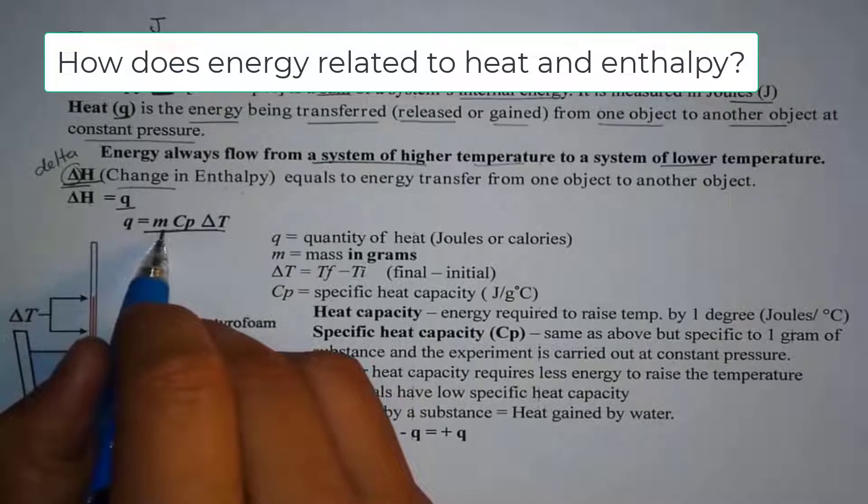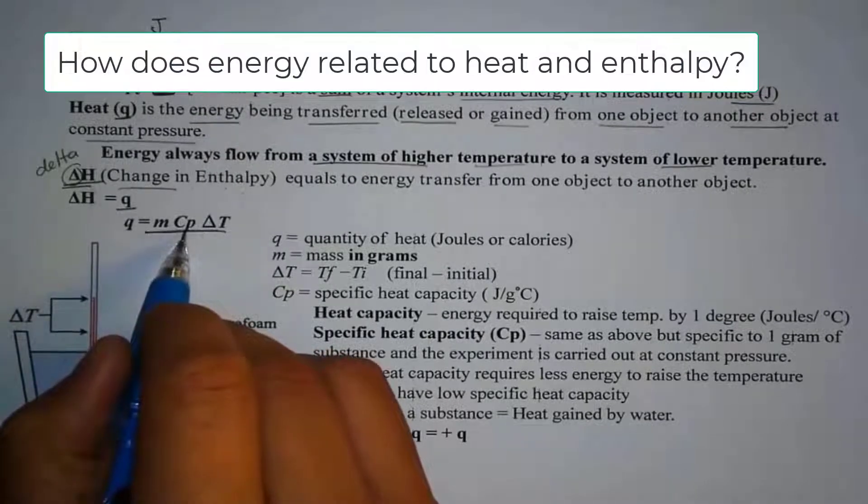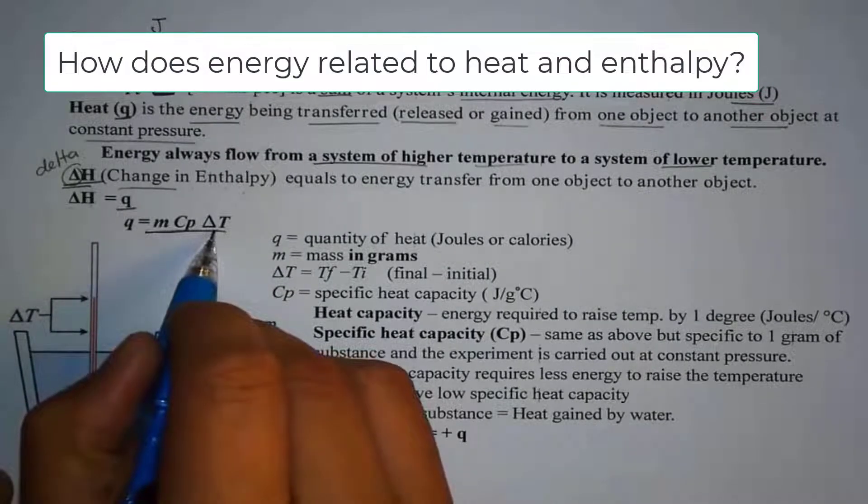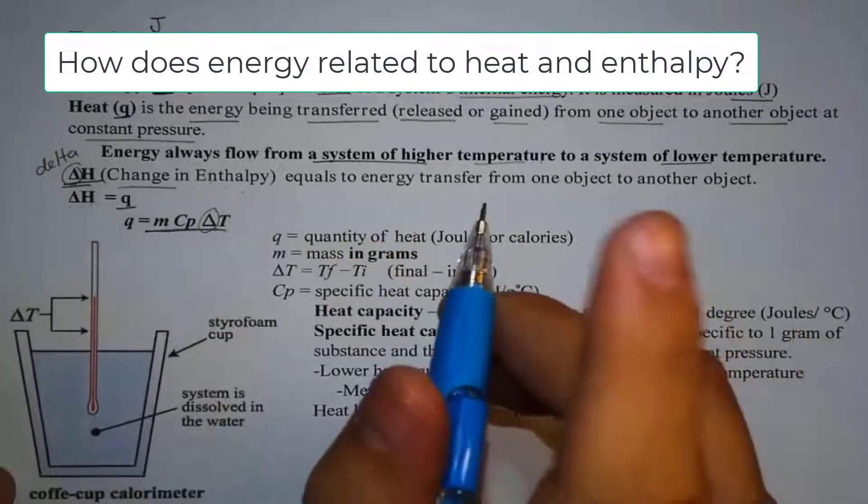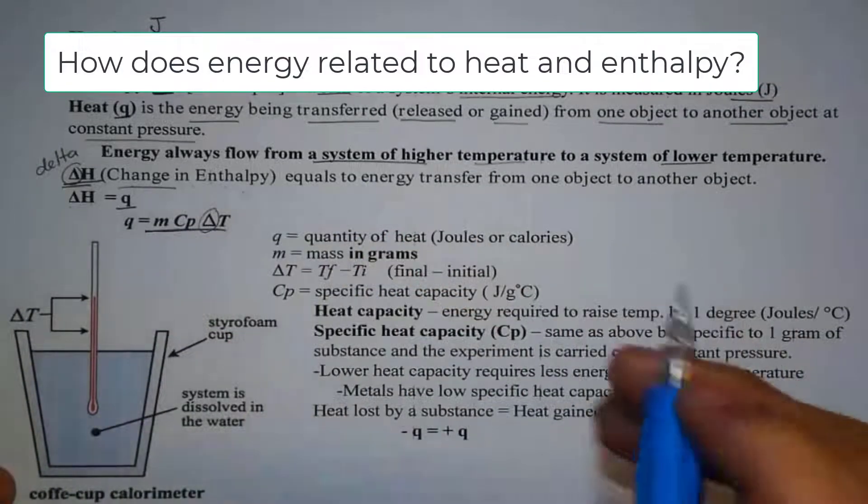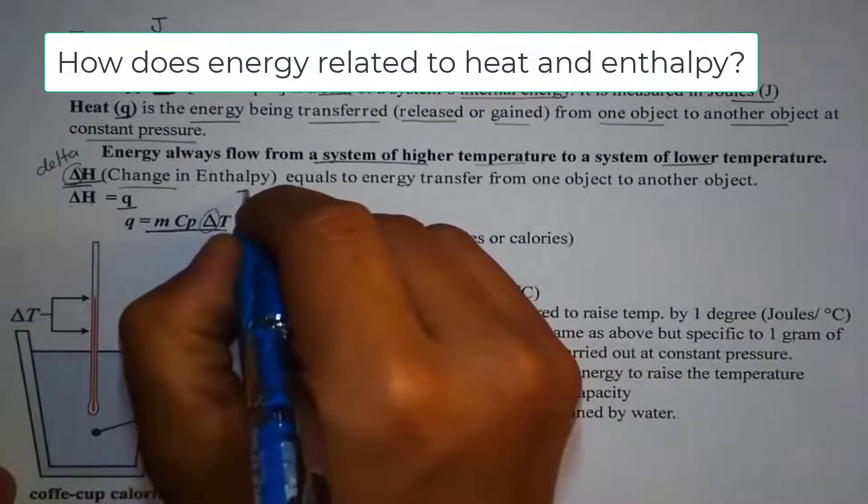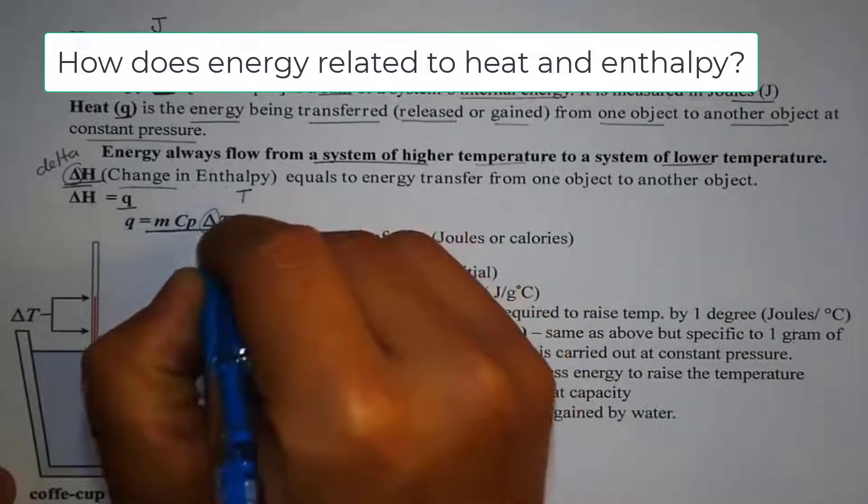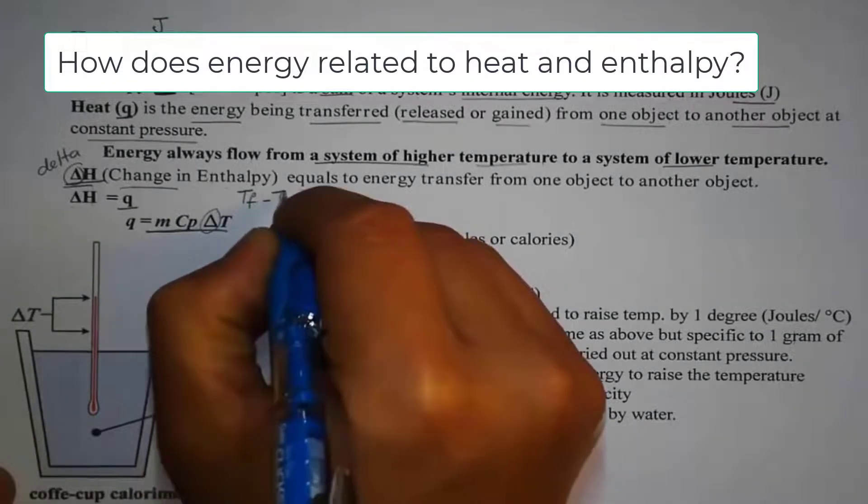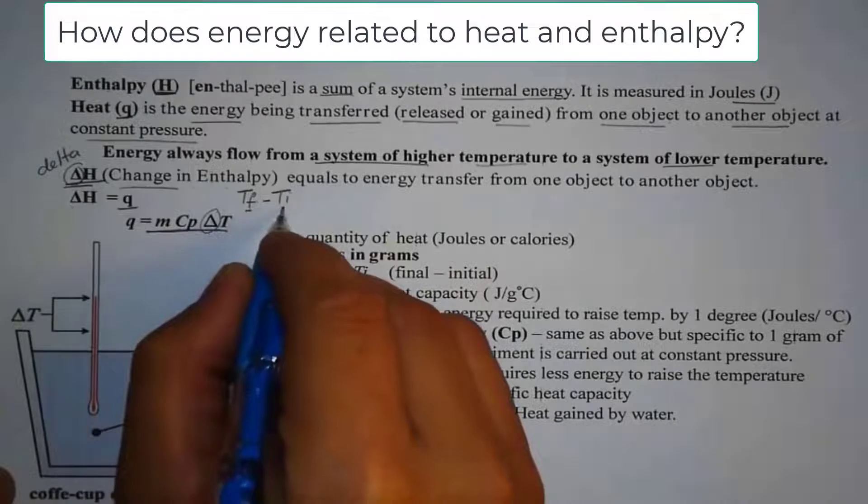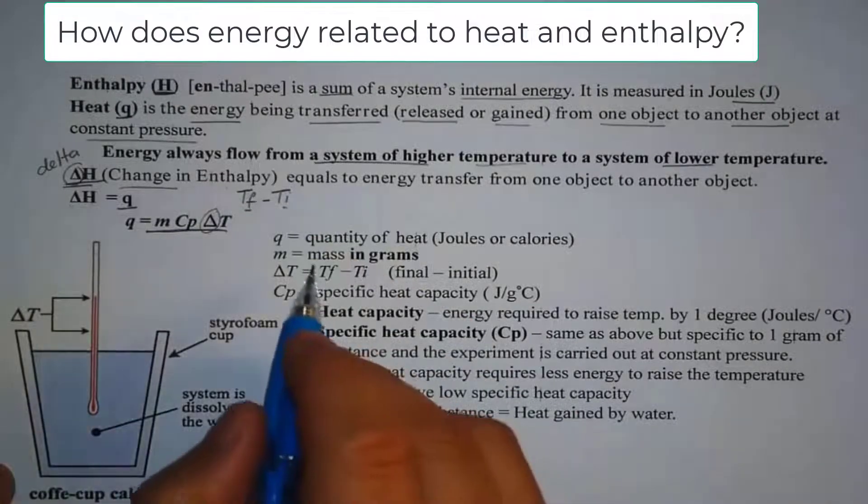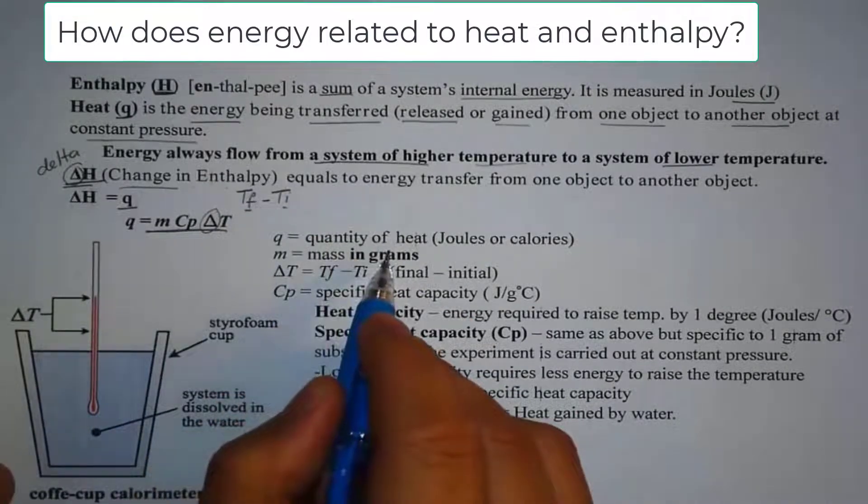Q is equal to mass times specific heat times delta T. And again, delta T is the change, right? When we look at change, what are we really looking at? The change is always relative in terms of final. In this case, we have delta T that's T final minus T initial. So every time you see delta T, always think of final minus initial. And of course, I further describe them here.